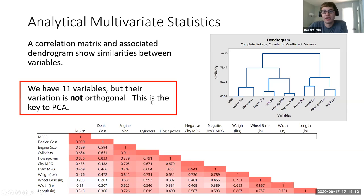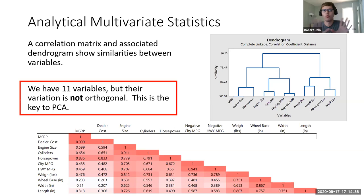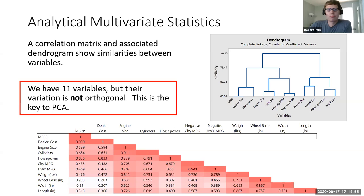We have 11 variables, but their variation is not orthogonal. What orthogonal means is: if we have variance in one direction — say MSRP — the variation of dealer cost is not going to be in a completely opposite direction. If we graphed those two together, we'd get more or less a line. If two variations were orthogonal, we'd get a random scatter plot with no correlation. But if they're non-orthogonal, if they're correlated, we'd see some sort of trend — and near 0.999, a very observable trend.